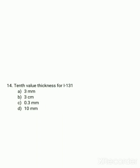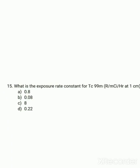The tenth value thickness (TVT) for Iodine-131: we know that 1 TVT = 3.43 HVT (one tenth value thickness equals 3.43 half value thicknesses). Using this formula, the exact answer is 10 mm, because the half value thickness for Iodine-131 is 3 mm — and 3.43 × 3 ≈ 10 mm. The exposure rate constant for Technetium-99m is 0.8 roentgen per millicurie per hour at one centimeter.